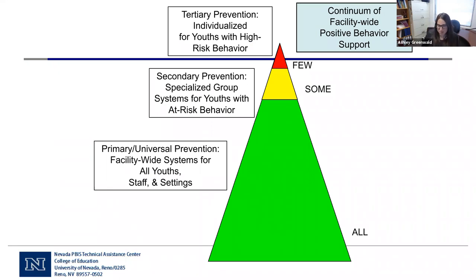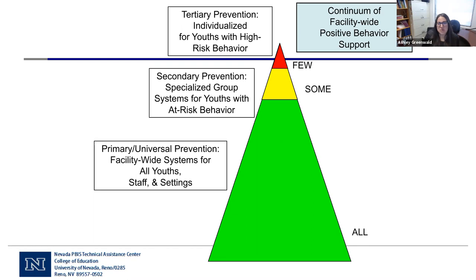Tier one is the primary or universal support for all youth — and all staff — across all settings. In facilities this is fairly unique compared to school systems because there are more settings to consider. As we move into higher tiers, the majority of emphasis should still be at tier one because that's where we're supporting the majority of youth. Without a strong foundation we can't work effectively at higher tiers.